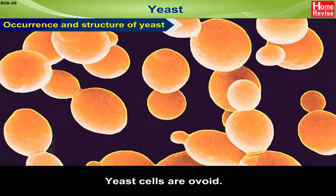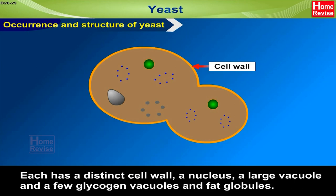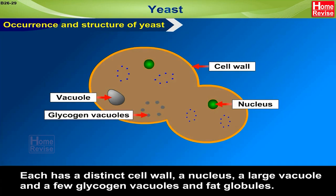Yeast cells are ovoid. Each has a distinct cell wall, a nucleus, a large vacuole, and a few glycogen vacuoles and fat globules.